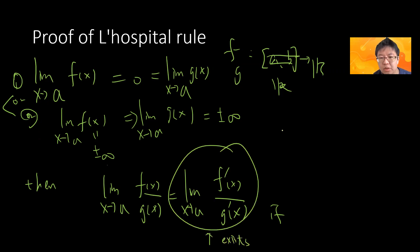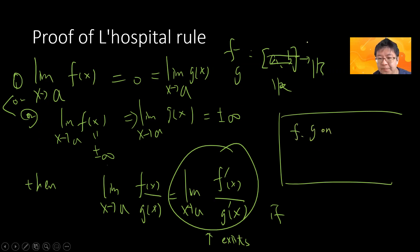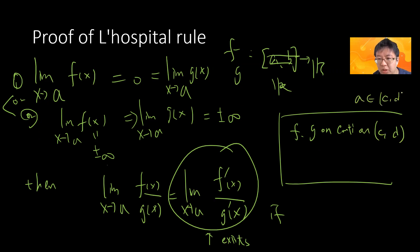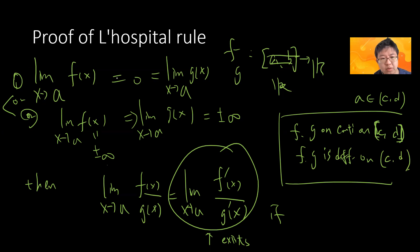The conditions are: f and g are continuous on some interval [c, d] where a belongs to [c, d], and f and g are differentiable on (c, d). One of these cases holds: 0/0, or ∞/∞, or ∞/−∞, or −∞/∞. If the limit of f'(x)/g'(x) exists, then the limit of f(x)/g(x) is the same.